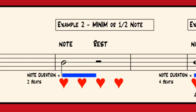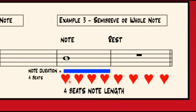Let's look at how we write a four beat note. Let's hear the pulse. Notice how this time the duration of the note lasts for four pulses or four beats. Traditionally this note is known as a semibreve, or in contemporary music it's known as a whole note. And of course it has its own special rest symbol.